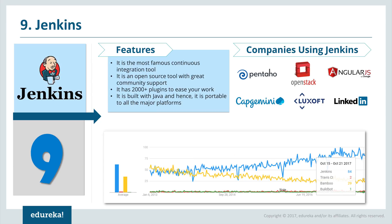Jenkins is a continuous integration tool and one of the most popular tools with great community support. It is open source, has over 2000 plugins for various development, testing, and deployment technologies, and is built with Java, making it portable to all major platforms. Companies that use Jenkins include Pentaho, OpenStack, AngularJS, Capgemini, and LinkedIn. When compared with Travis, Bamboo, and Buildbot, Jenkins is way ahead.